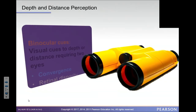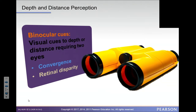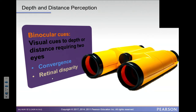Depth and distance perception. Binocular cues are visual cues to depth or distance that require both eyes. For us to determine depth, our retinas see two different parts of what is in our eyesight.